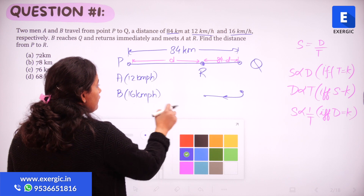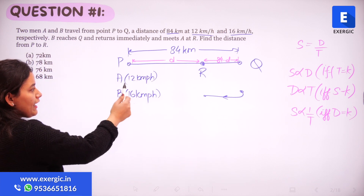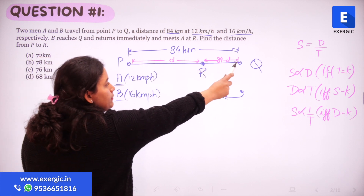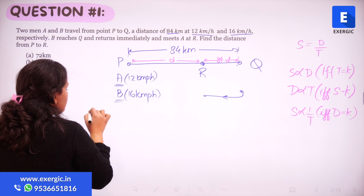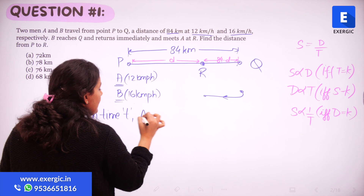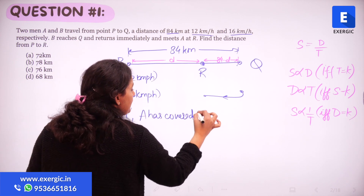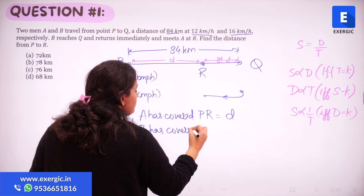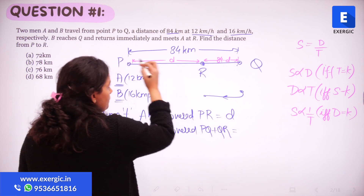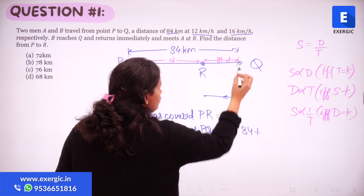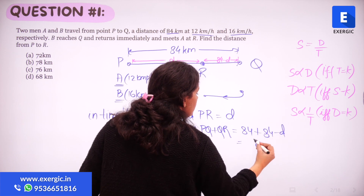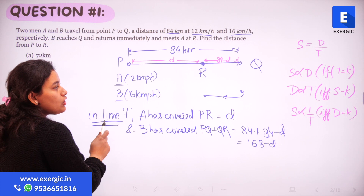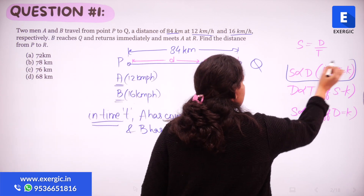Reading the question carefully: in the time A covers distance PR, B has covered PQ plus QR. Taking the time as T — in time T, A has covered PR which is D, and in that same time B has covered PQ plus QR, which is 84 plus (84 minus D) = 168 minus D. Time is constant here, so we use the direct proportionality between speed and distance.